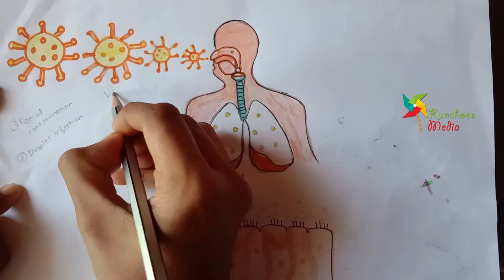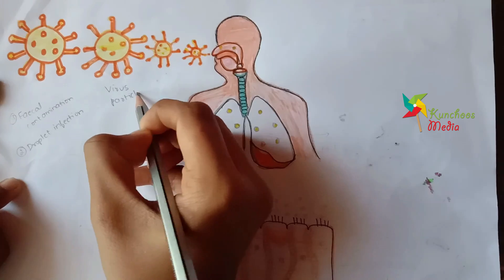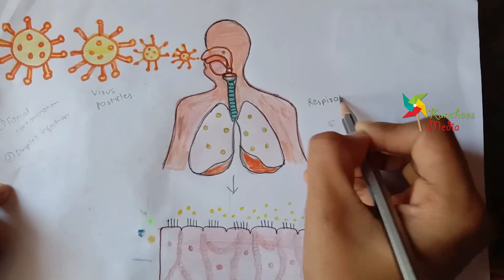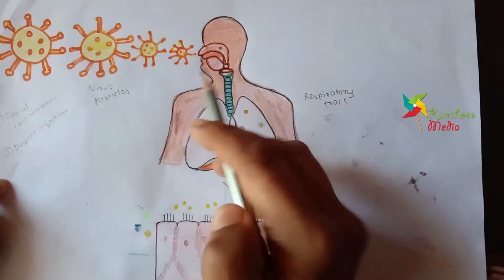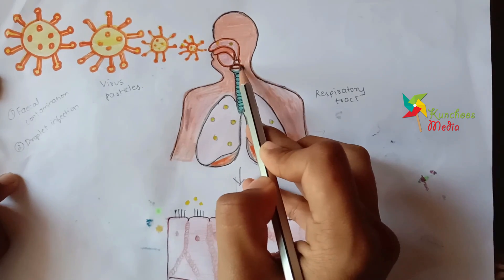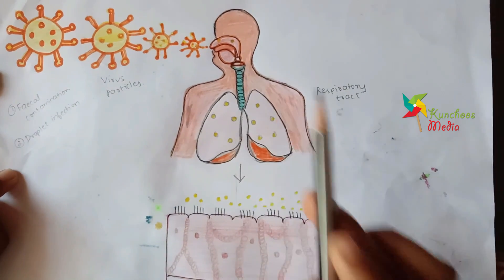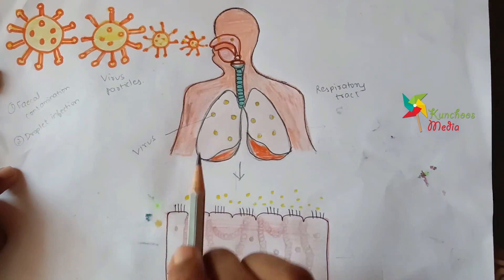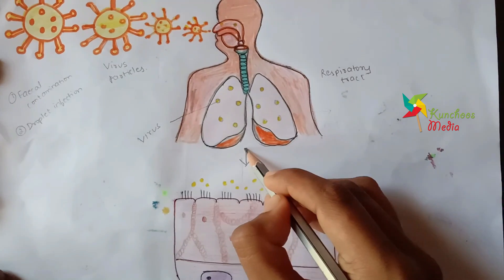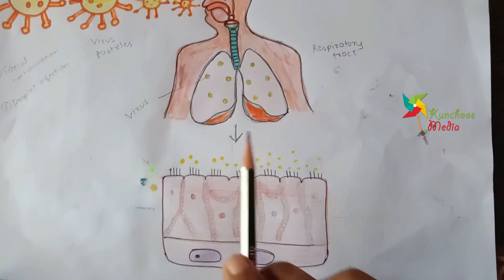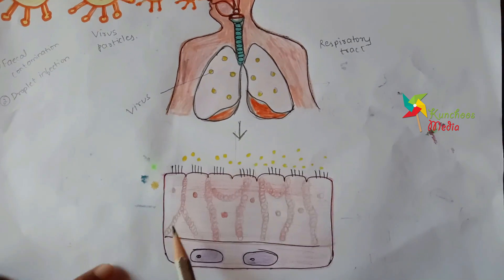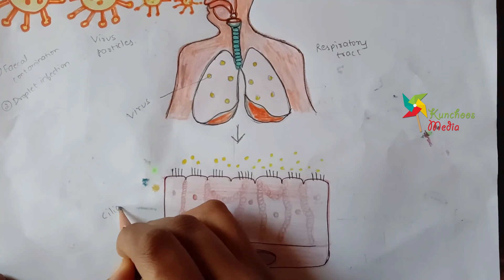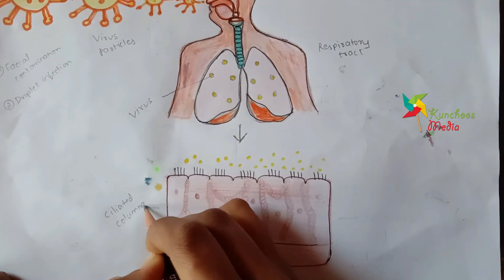As you can see, these are the virus particles and they enter our respiratory tract. This is how the structure of a respiratory tract looks like — it consists of the nose, the larynx, pharynx, the windpipe, and finally the lungs. As you can see, these are the virus particles which have been deposited on the lungs.